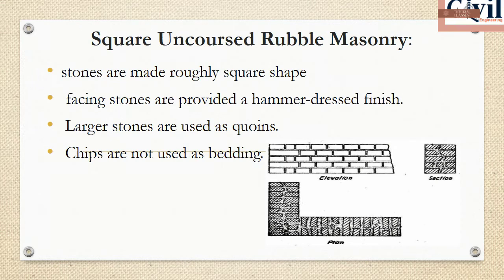In the square rubble masonry, we place square-shaped stones. This is the facing stone, finished with a hammer. The largest stones are used, and the bedding plane provides the structure. Stones that do not fit are not used.